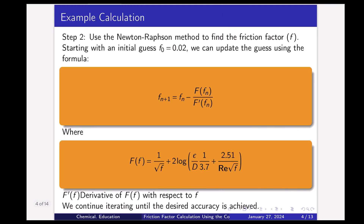The Newton-Raphson method states that x_{n+1} = x_n − f(x_n)/f′(x_n). Similarly here, since f is the root of the equation, we write: f_{n+1} = f_n − F(f_n)/F′(f_n).